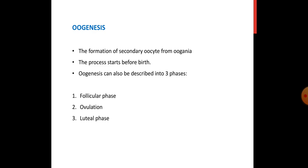In oogenesis we see the formation of secondary oocyte from oogonia. The process starts before birth — even before birth, when the embryo is in the mother's womb, all oogonia have already formed. They become arrested at the primary oocyte stage and remain arrested until birth and until adolescence (puberty), after which the first meiotic division starts. Oogenesis can be divided into three phases: follicular phase, ovulation, and luteal phase.